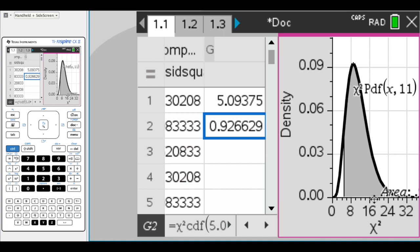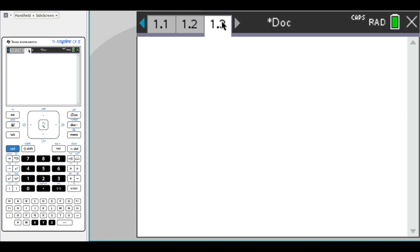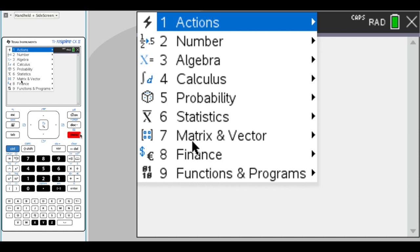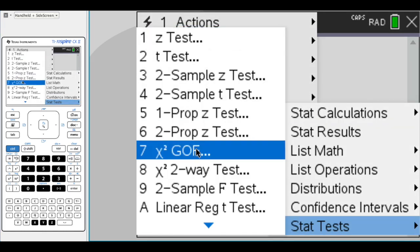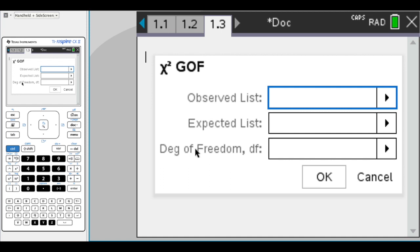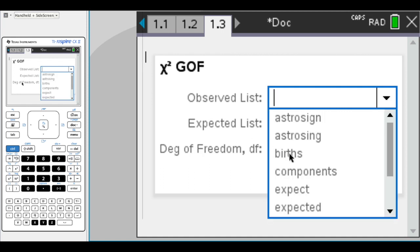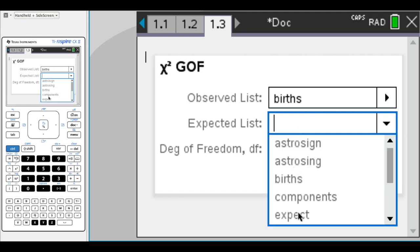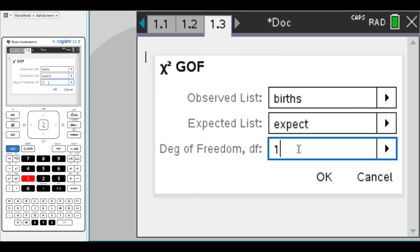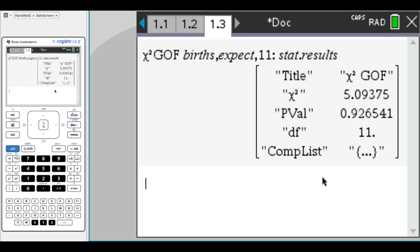If you did not want to use your calculator with the spreadsheet, we could also go and use the calculator menu. What we're going to do is go menu, statistics, and now we're going to go to stat tests, and we're going to do a chi-squared goodness of fit. What we want to look at is the births in comparison to our expected value with our degrees of freedom of 11. I hit OK on there.